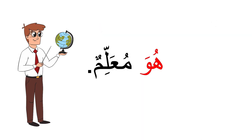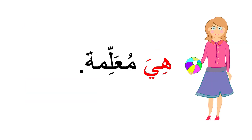We also learned about the pronouns هو and هي. هو means 'he' and هي means 'she'. For example I say هو معلم — he is a teacher. هي معلمة — she is a teacher. In Arabic we don't use 'is', 'am', or 'are'.